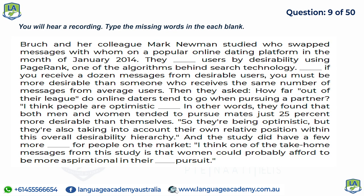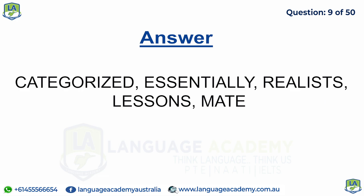Brooke and her colleague Mark Newman studied who swapped messages with whom on a popular online dating platform in January 2014. They categorized users by desirability using PageRank, one of the algorithms behind search technology. If you receive a dozen messages from desirable users, you must be more desirable than someone who receives the same number of messages from average users. They found that both men and women tended to pursue mates just 25 percent more desirable than themselves — optimistic, but also taking into account their relative position in the overall desirability hierarchy. One key finding: women could probably afford to be more aspirational in their mate pursuit.